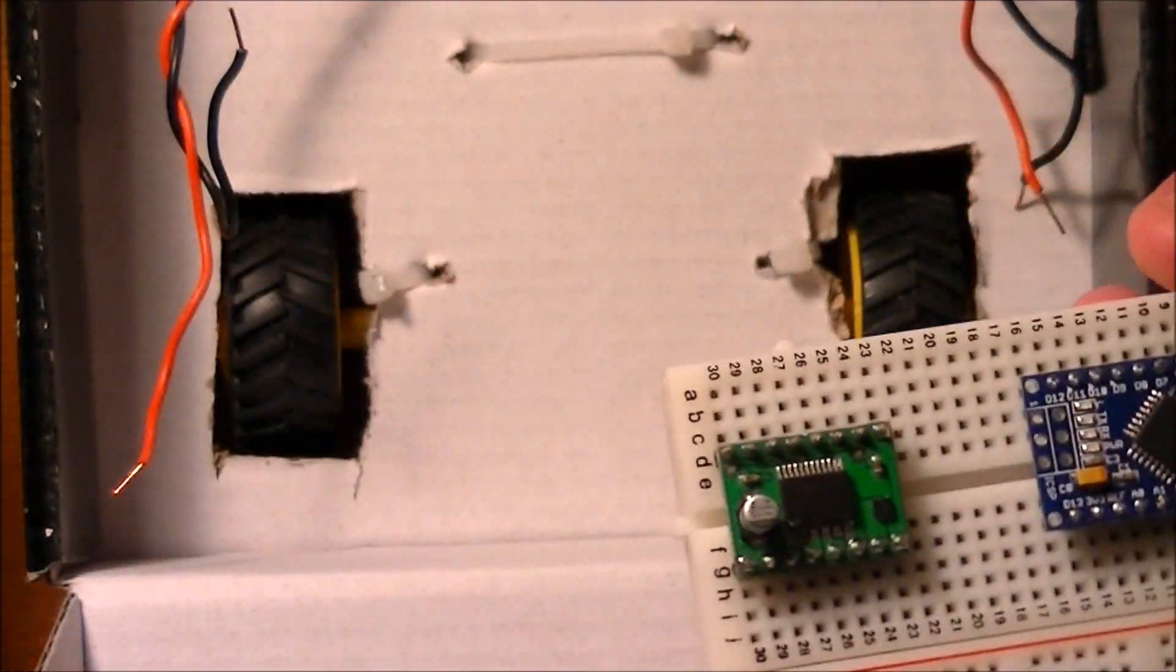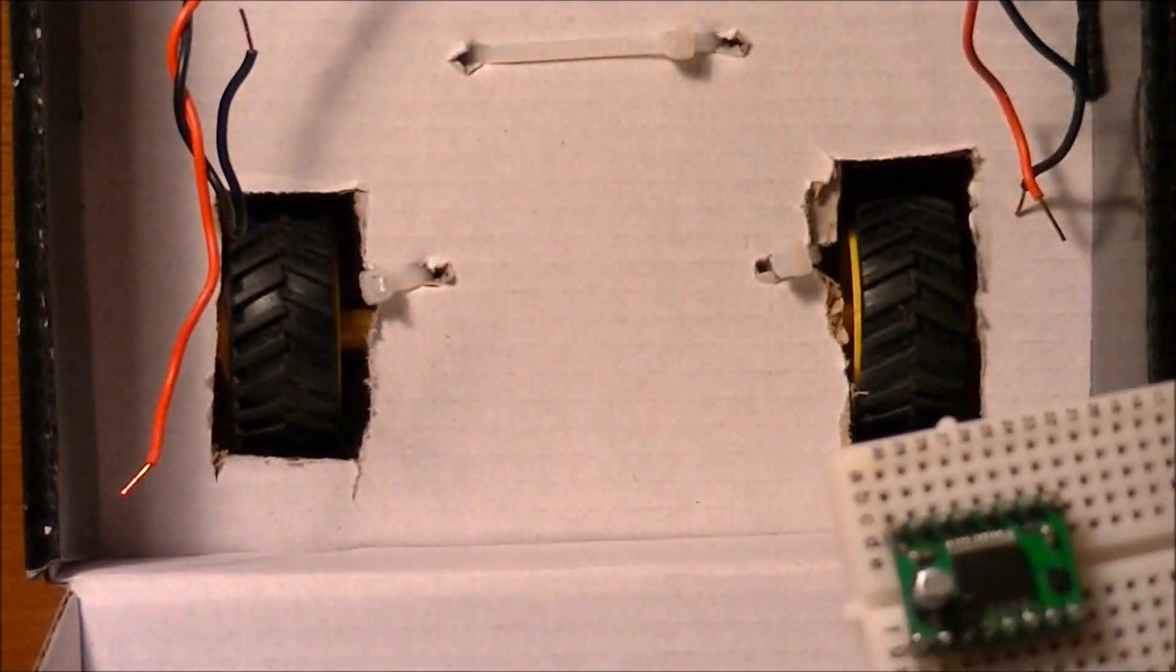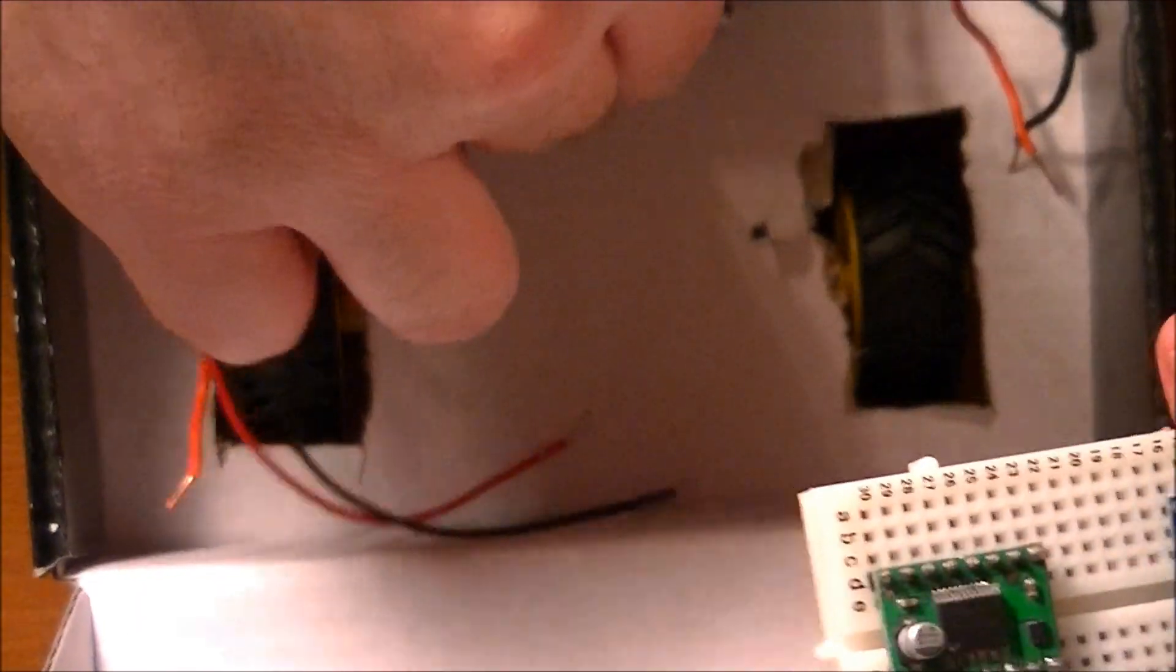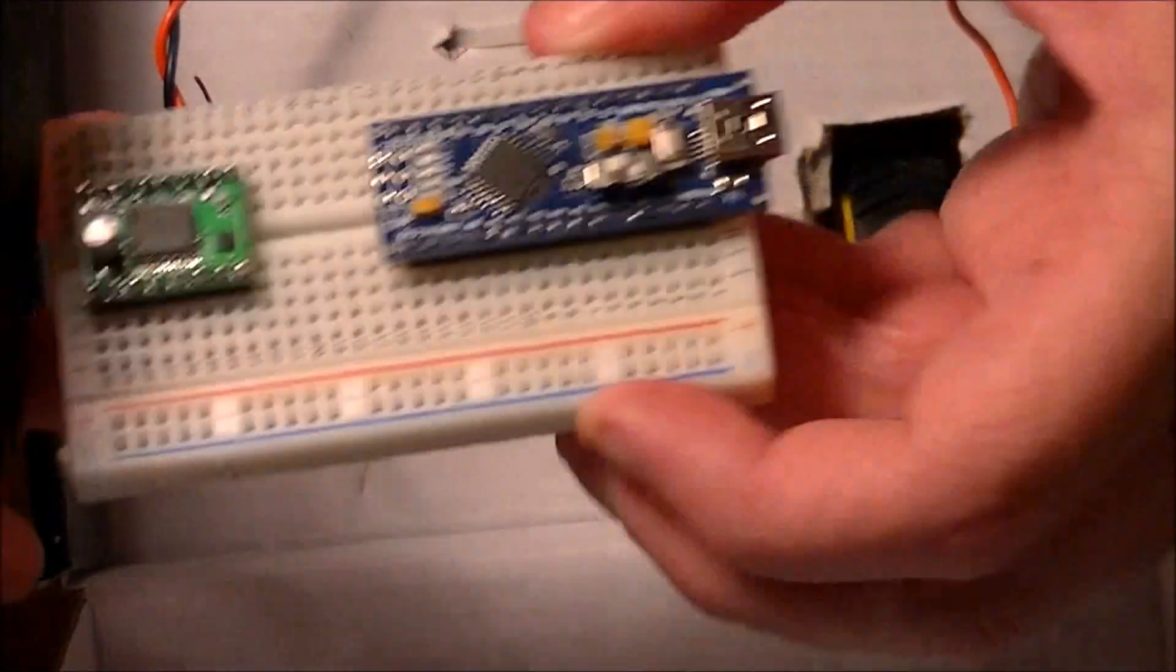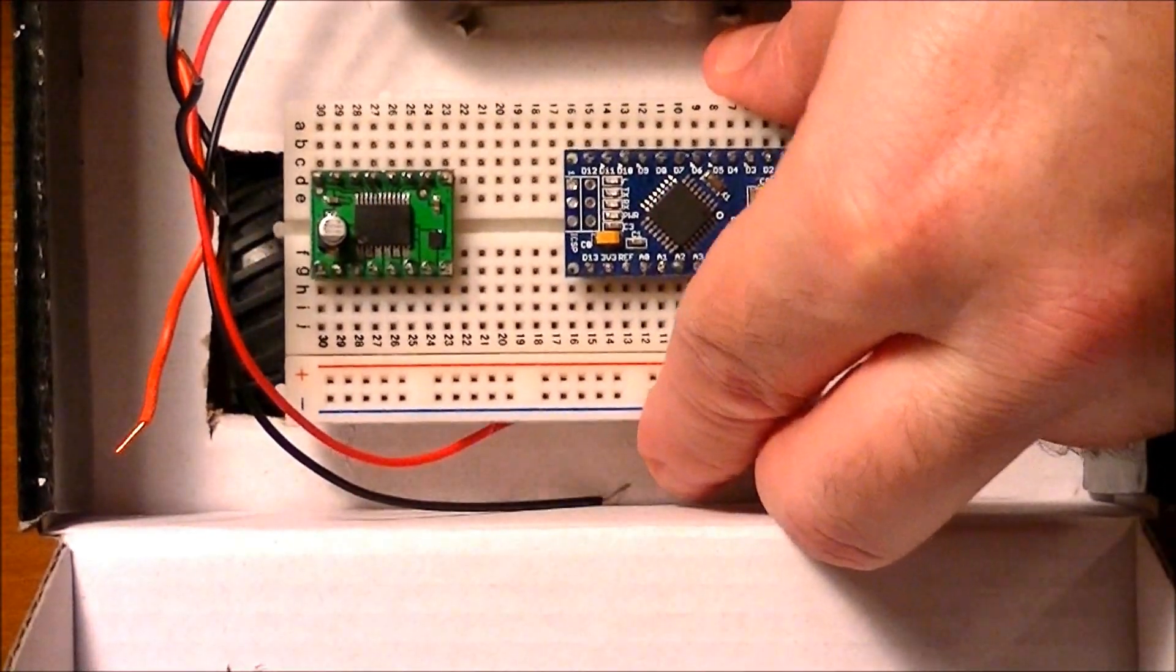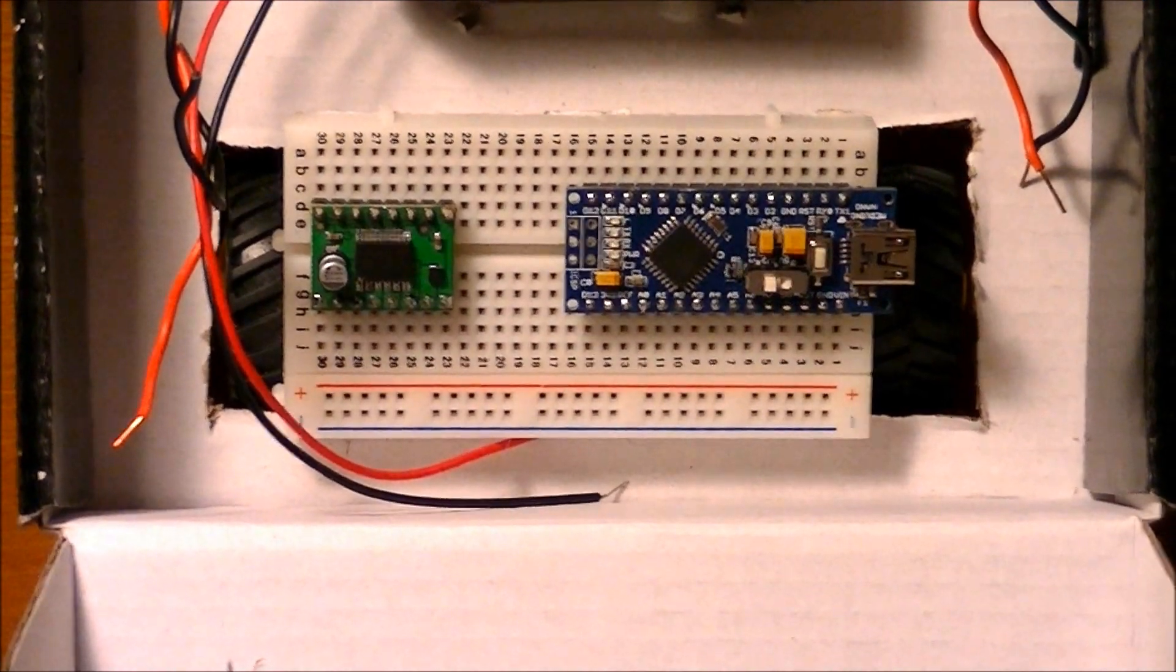Basically what I'm going to have to fit in this box and on the base is this four cell battery pack that I'm going to be putting down on this side, and then this breadboard putting just like this. Now you can see obviously if I put the board in, it's sitting right on top of the tires and that's not good.